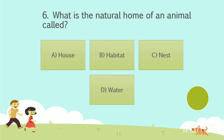Question No. 6. What is the natural home of an animal called? Option A: house. Option B: habitat. Option C: nest. Option D: water. Your time starts now. The answer is Option B, habitat. Let's go to the next question.